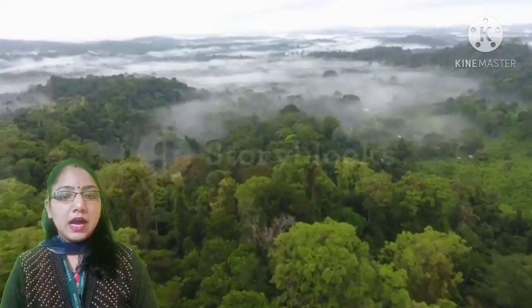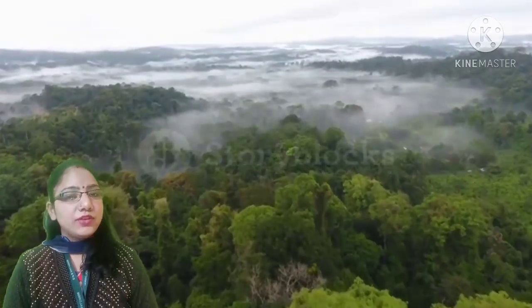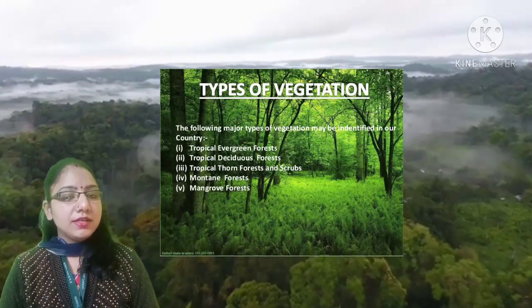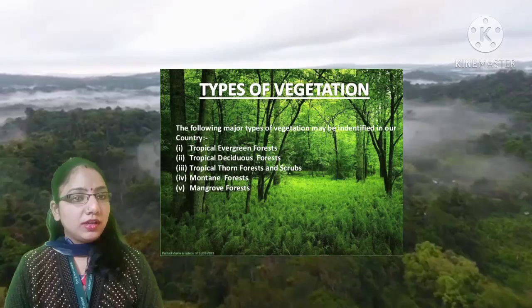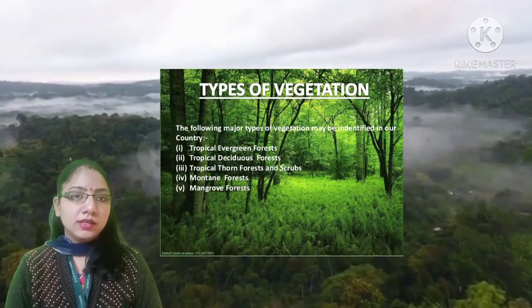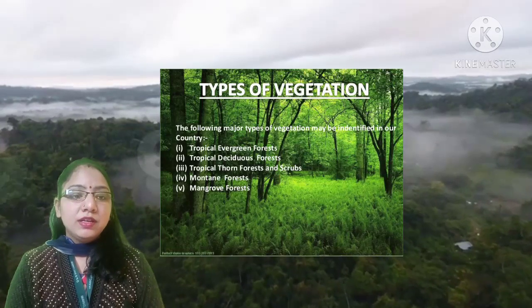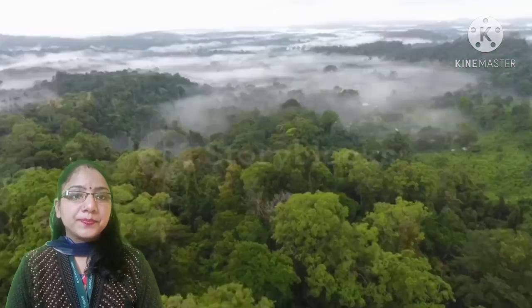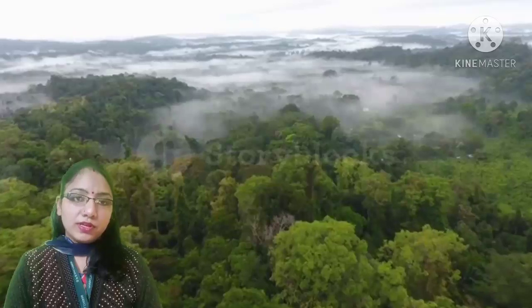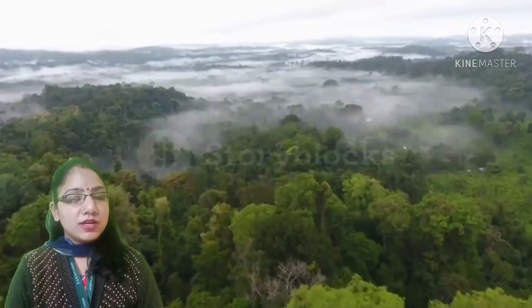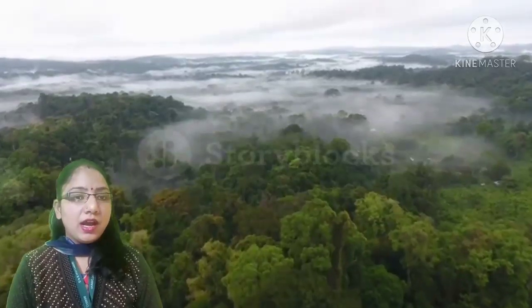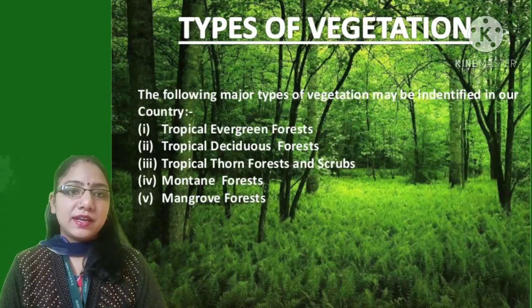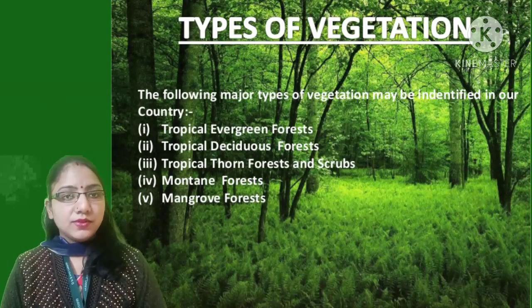India is a land of great variety of natural vegetation. On the basis of types of vegetation and climatic reasons, it can be classified into five categories. Number one is tropical evergreen and semi-evergreen forest. Number two is tropical deciduous forest. Number three is tropical thorn forest. Number four is mountain forest. And number five is littoral or swampy forest. Let's look at the main features and characteristics of these types of forest.